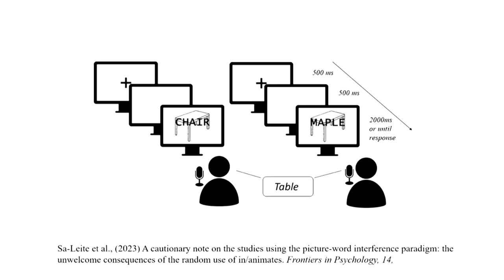The idea is that there should be some kind of relationship between the picture and the distractor that would moderate the performance of participants naming the picture. As seen in a figure drawn from Salat and colleagues' 2023 paper, on one hand there is a picture of a table with the word 'chair' on it, which is a semantic relative of 'table' — a semantic relationship. On the other hand, the picture of a table has the word 'maple' written over it, where there is a phonological relationship between 'table' and 'maple.' So 'maple' is a phonological distractor, whereas 'chair' is a semantic distractor. Based on whether you use a phonological or semantic distractor, the naming response times of participants will vary, telling us something about the chronology of speech production.